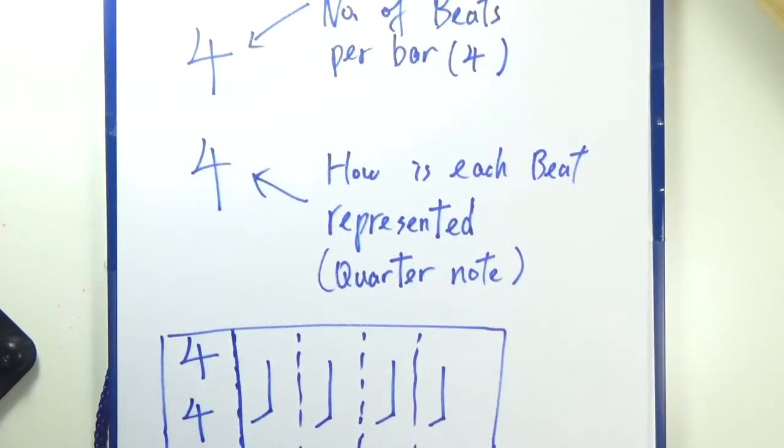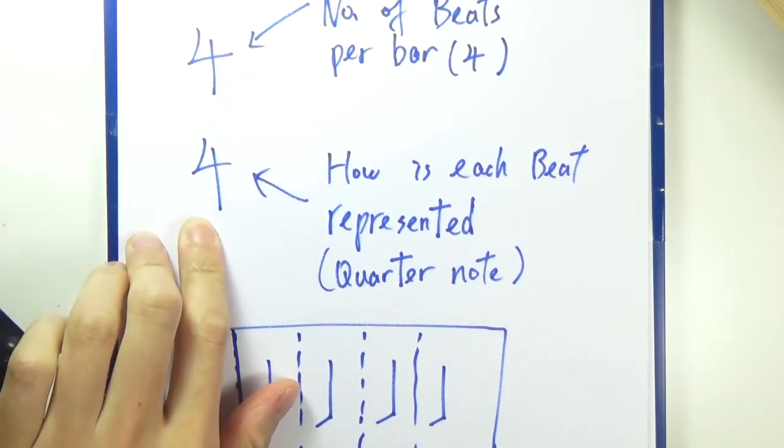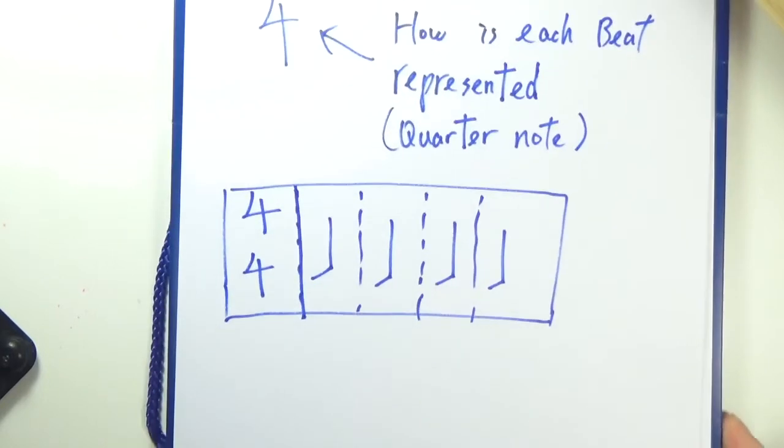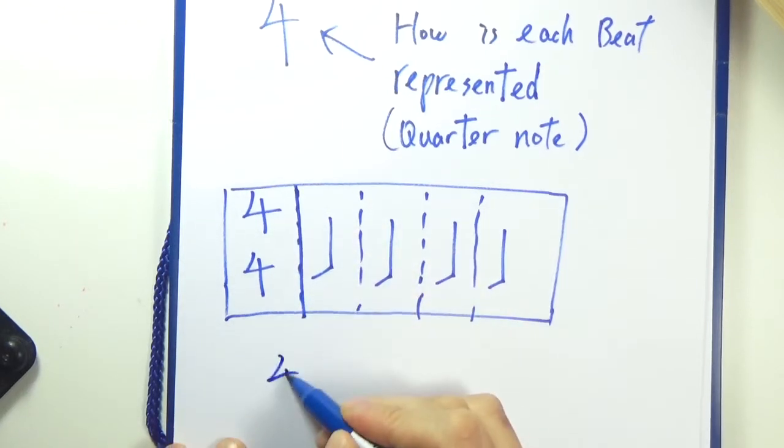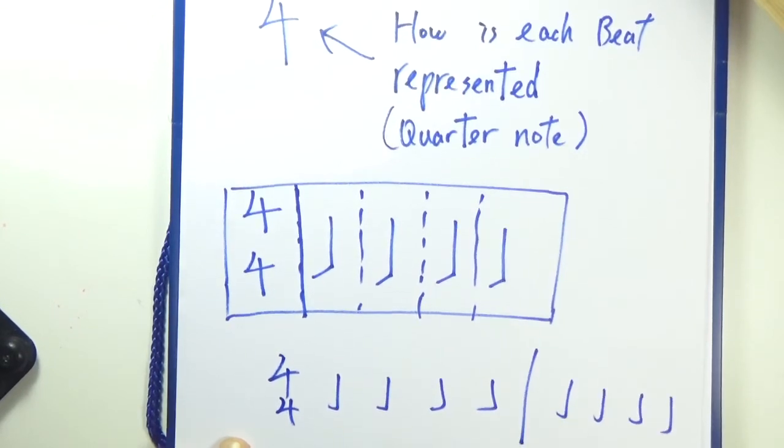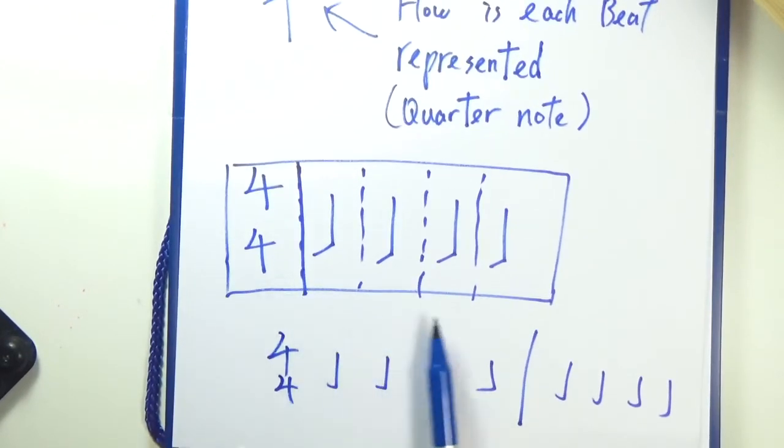The lower four indicates how each beat is represented. A four is referring to quarter notes. For this example, if you look at a piece of music, oftentimes you have something like this, and then a bunch of notes, and then another bar and a bunch of notes.